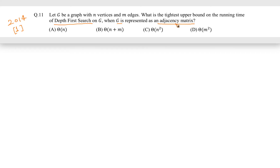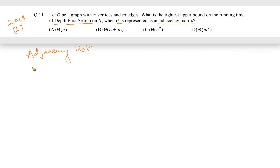Any graph can be represented in two different ways. One is called adjacency list representation and another one is called adjacency matrix representation.